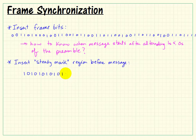The ones and zeros also go by the names mark and space. So this so-called steady mark region will be an area of a long string of ones just before the message.